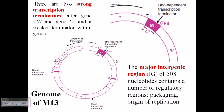After gene 4 and gene 8, there are two transcriptional terminators written as IG sequences. These IG sequences are called the major intergenic region — an intergenic region of 508 nucleotides which contains a number of regulatory elements regulating packaging and origin of replication. At both ends after gene 8 and gene 4, we have a Rho-dependent transcription terminator, as well as Rho-independent transcription terminator sites.